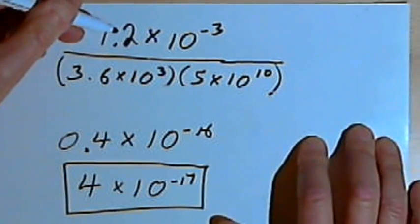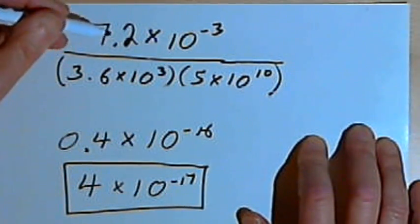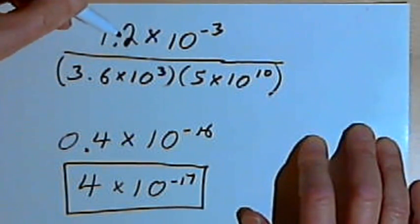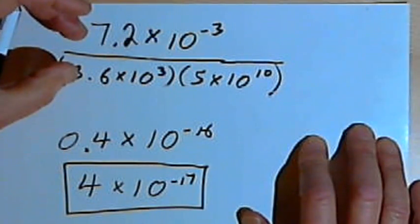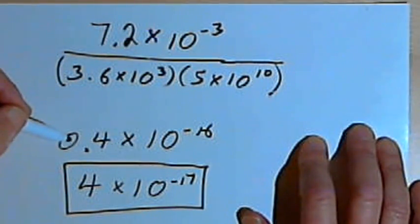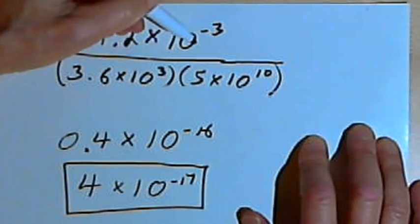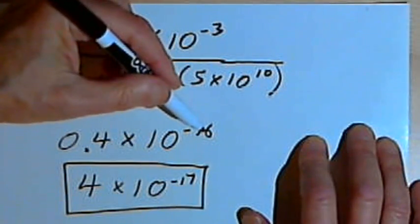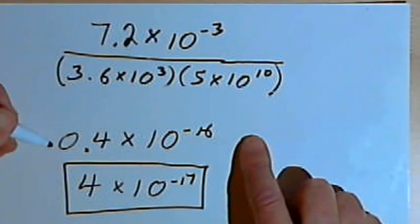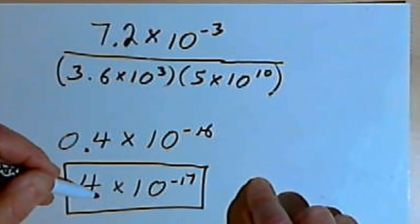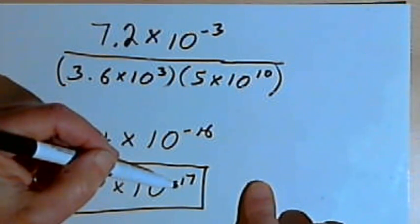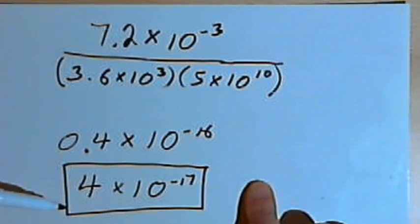So basically this example followed the same rule we used for the other ones. I took the first part of each of those scientific notation numbers separately, did the division for them, and ended up with 0.4. I took the power of 10 part, did the division for them separately, and ended up with 10 to the negative 16th. And then because that was not in proper scientific notation form, I moved my decimal over one place to the right. And to compensate for that, I decreased my exponent by 1. That gave me 4 times 10 to the negative 17th.